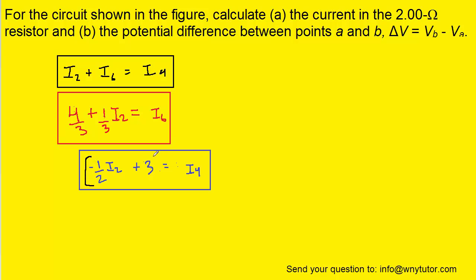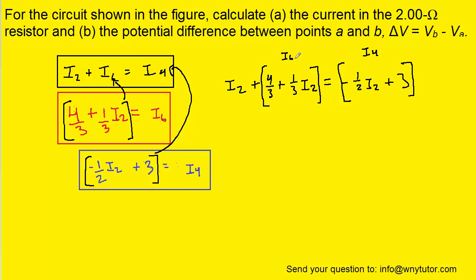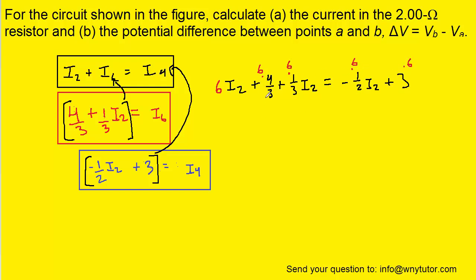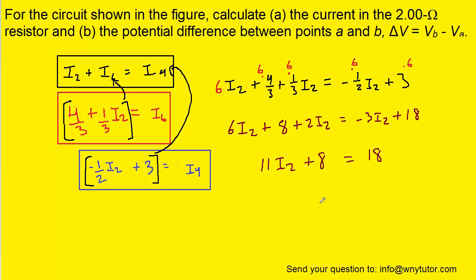We substitute the expressions for I4 and I6 into the junction equation I2 + I6 = I4. After substituting, we have an equation with only one variable, I2. To clear fractions, we multiply every term by 6. Gathering the I2 terms on one side and subtracting 8 from both sides, we divide by 11 and find I2 = 10/11 amps, which is approximately 0.909 amps.